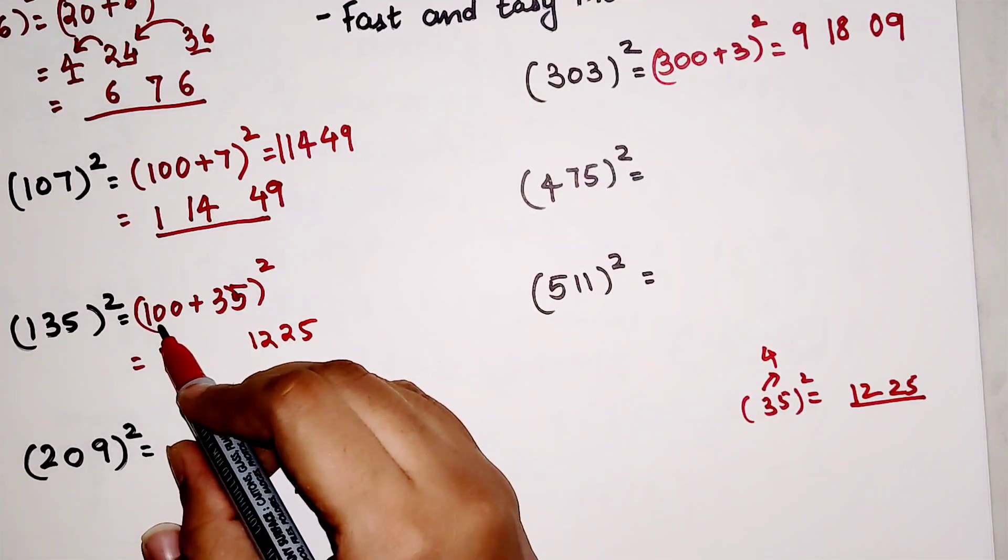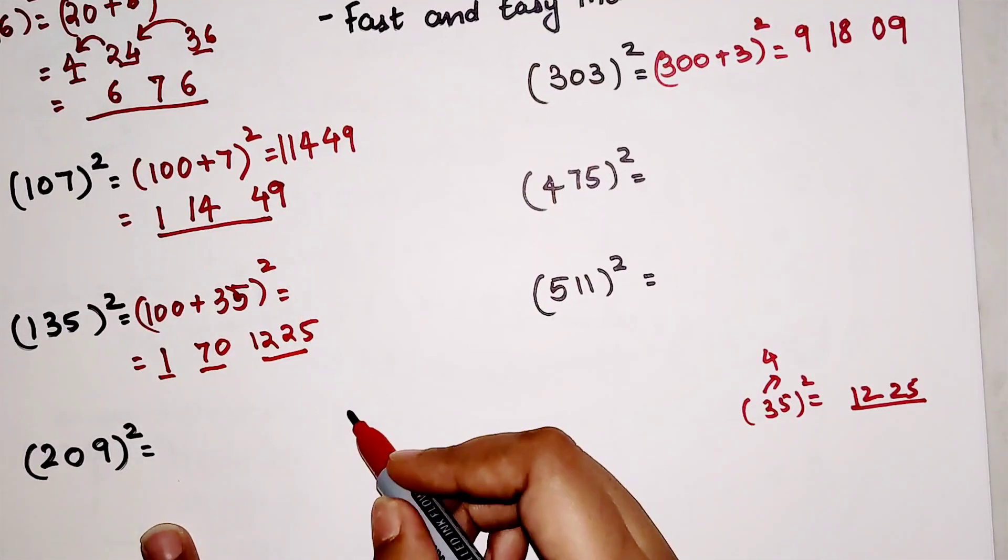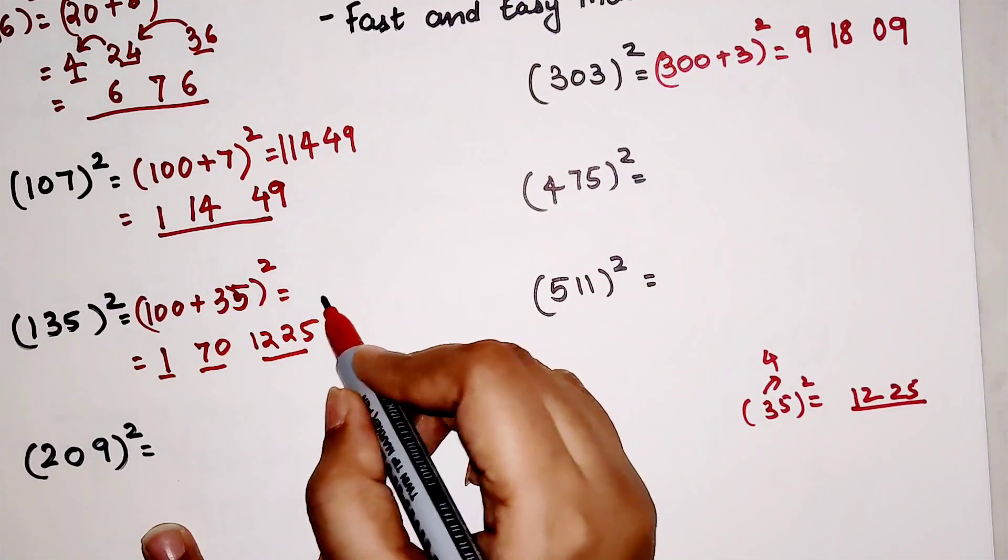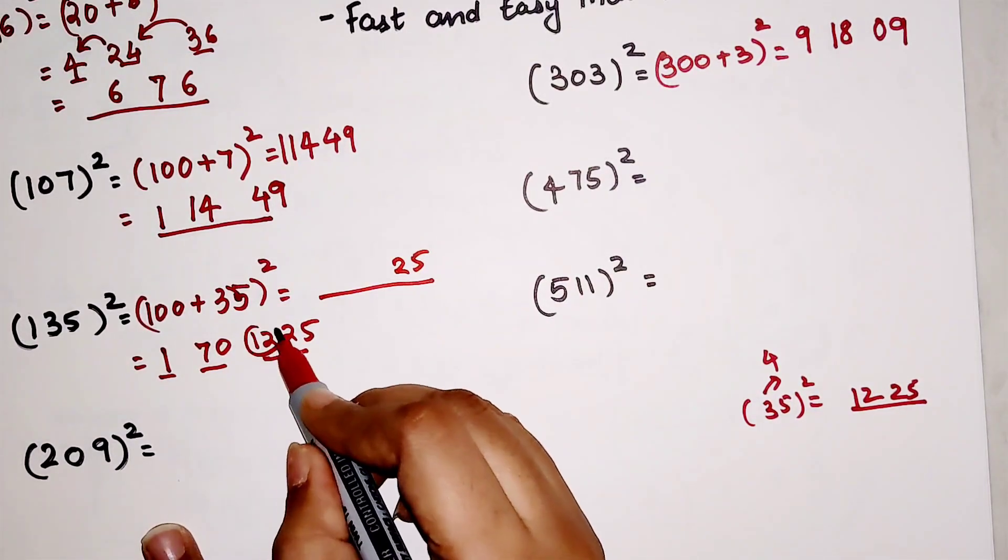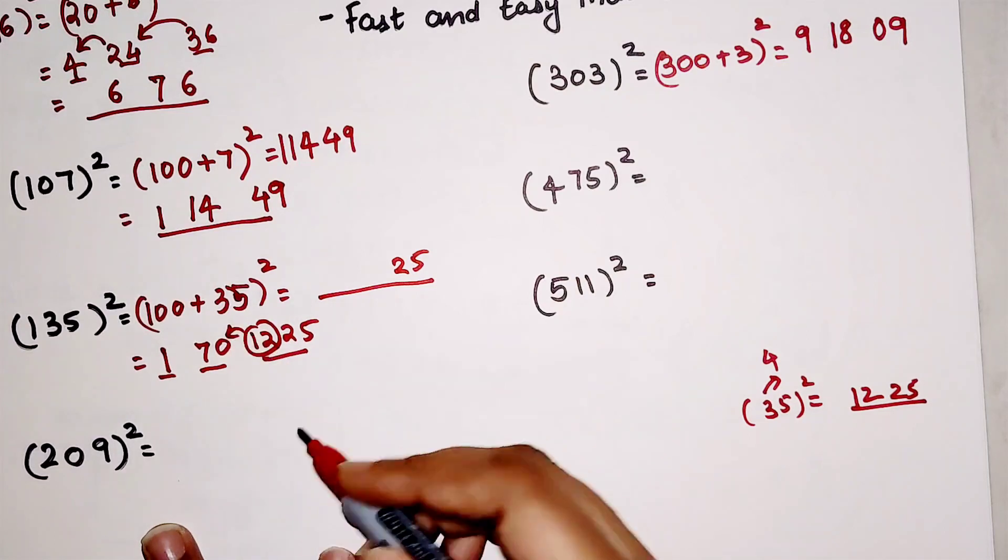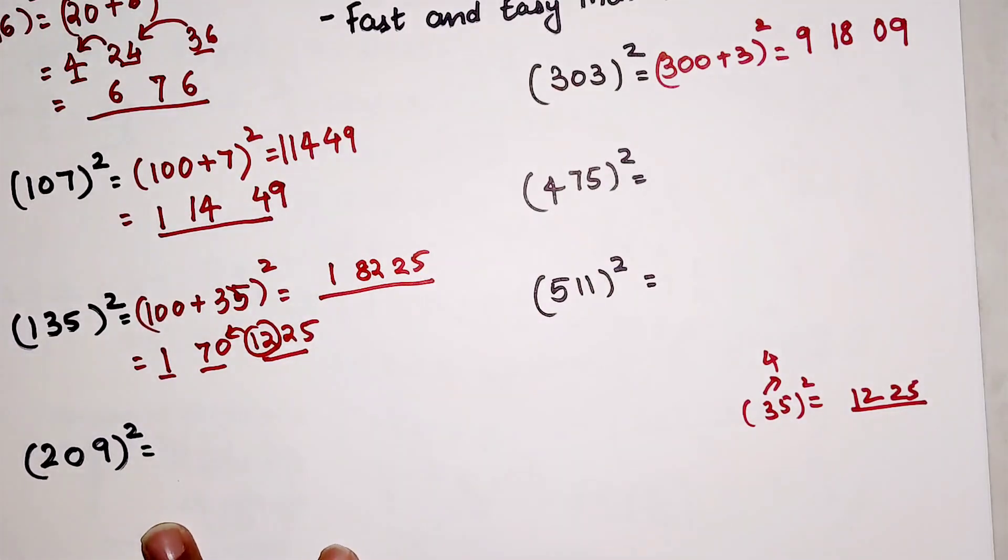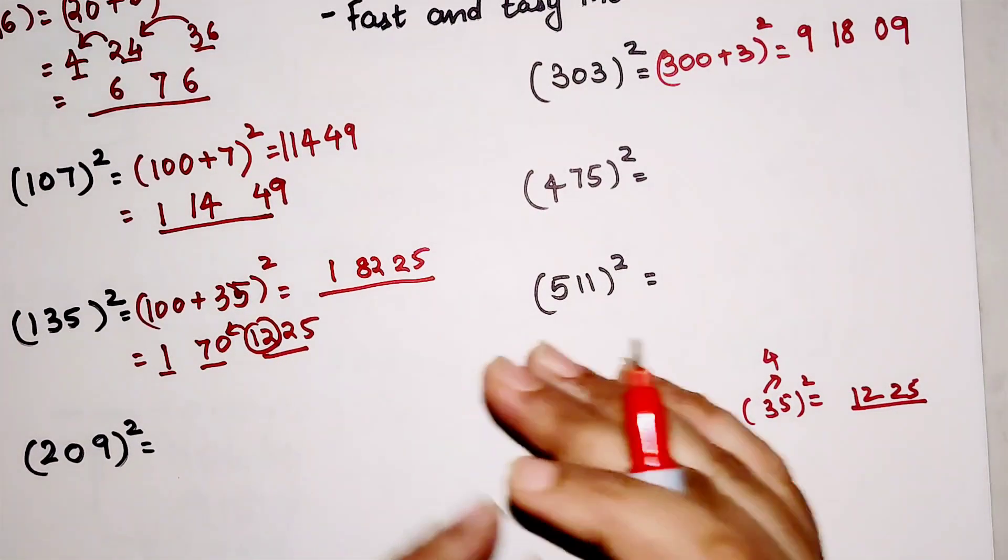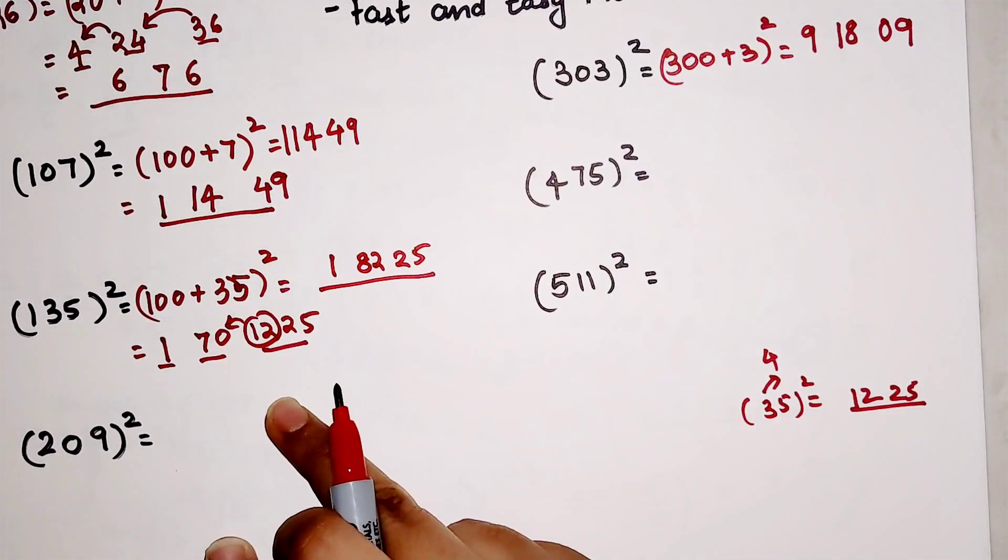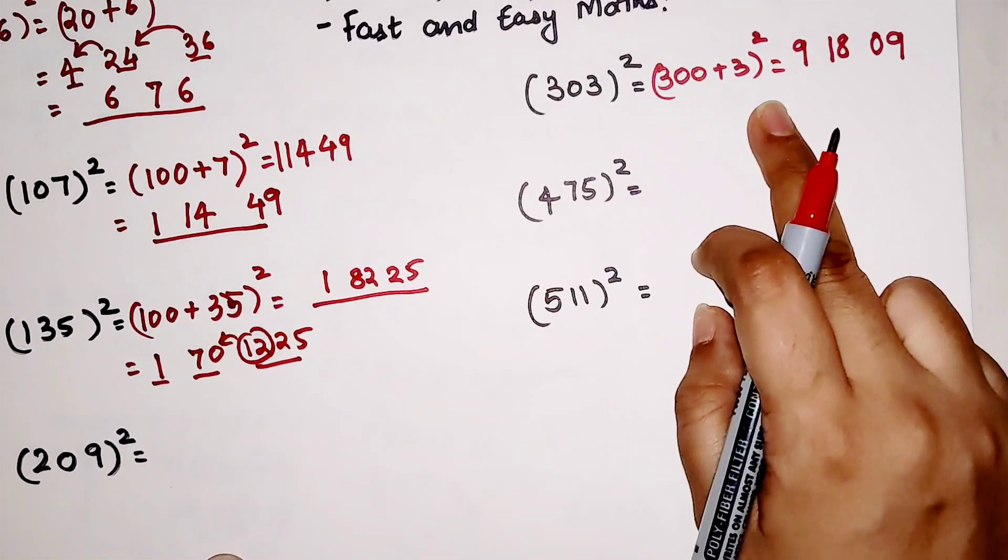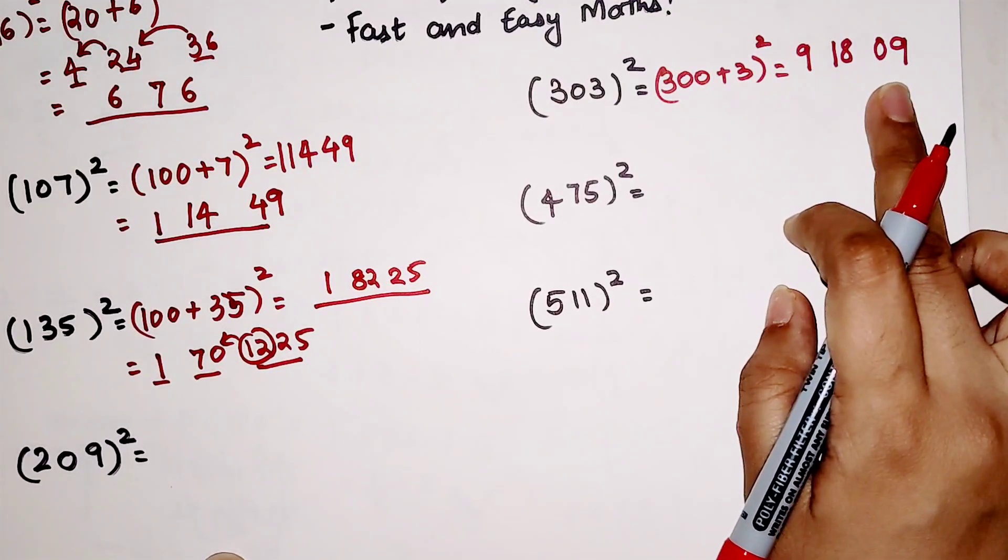And 35 into 1 is 35, into 2 is 70. So these are three parts of your answer. For your final answer, you will write 25 as is, and this 12 will be added to 70. So 70 plus 12 gets you 82, and 1 will be written as is. See, I have taken both examples—one with a carry and one which has a square but a single-digit square, so we will write it in terms of two digits.